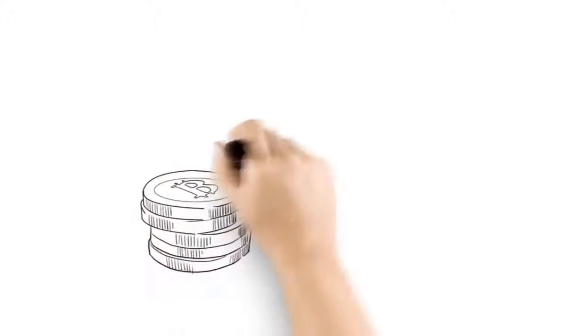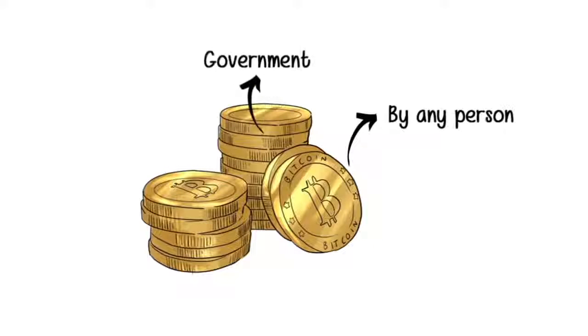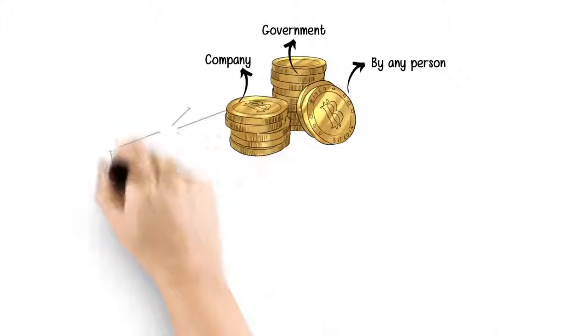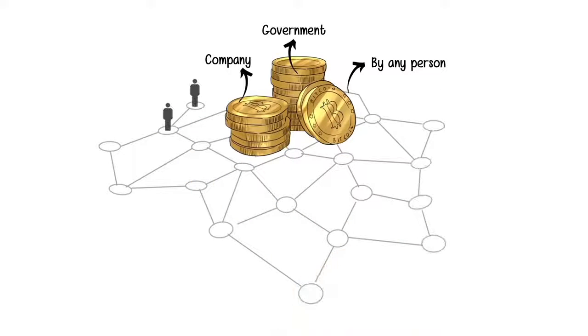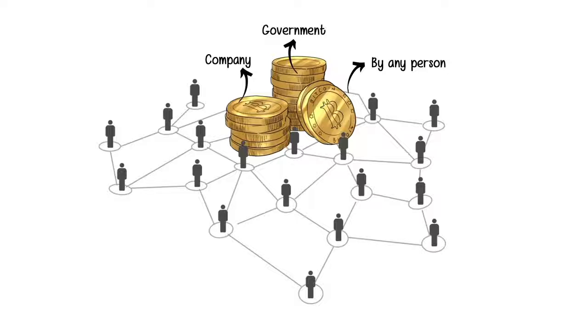Because Bitcoin isn't owned or controlled by any person, government or company. There is no central entity that powers Bitcoin, but there needs to be something that powers it. It's actually powered by thousands of people that have specialized computers that power the network, secure the network and verify transactions. This is called mining.